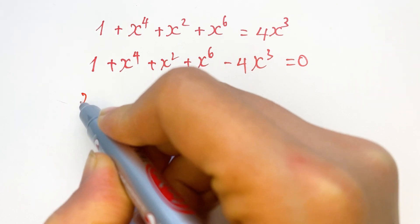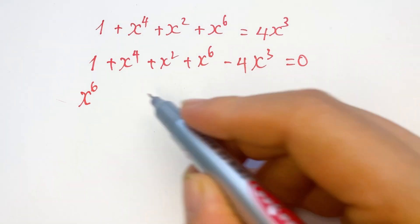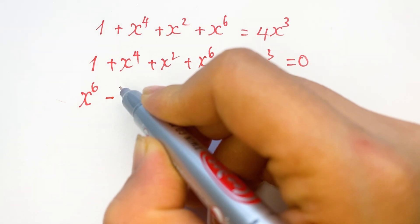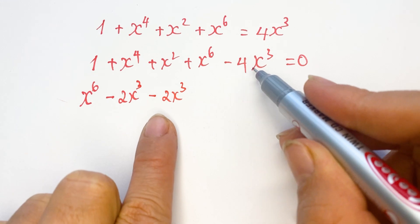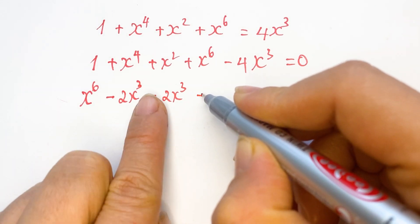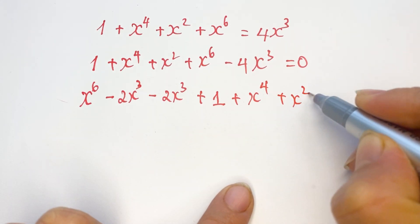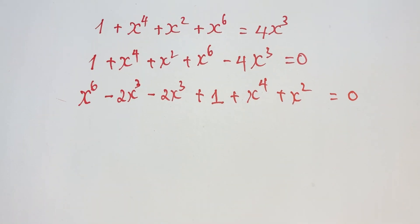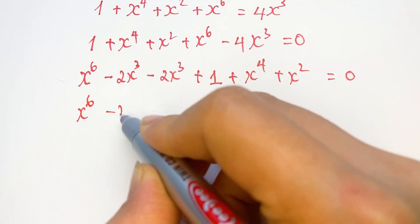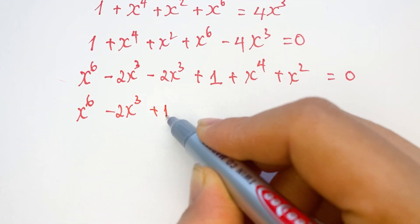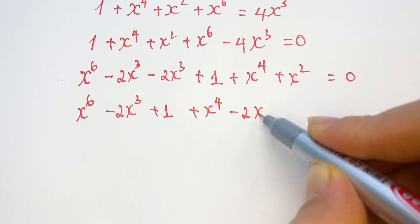Next, you look at x to the power 6. You need to break down -4x cubed: it equals minus 2x cubed minus 2x cubed, which equals minus 4x cubed. So the equation becomes: x to the power 6, minus 2x cubed, plus x cubed, plus x cubed, plus 1, plus x to the power 4, plus x squared, equals 0.